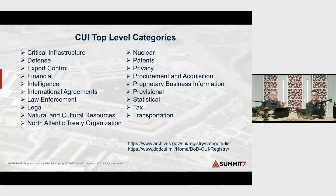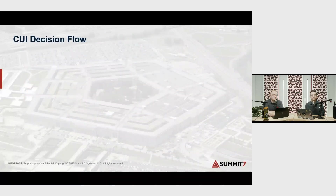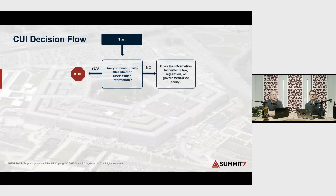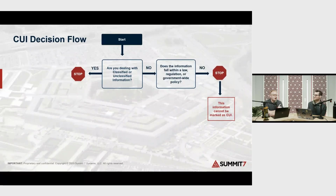The CUI decision flow is a good one to walk through — this is based on DoD's public documentation with some simplified language. You start somewhere, then ask: are we dealing with classified or truly unclassified information? Next — and you'll hear this a lot — does the information fall within a law, regulation, or government-wide policy? If it doesn't — stop — it is NOT CUI. Say it again for the people in the back: not CUI. All the wonderful proprietary data you have, if you're not delivering on a contract that calls it out as something unique to the government, it's probably not CUI.